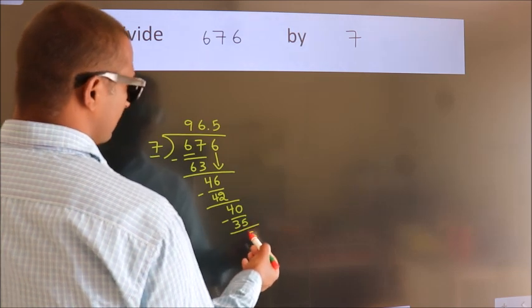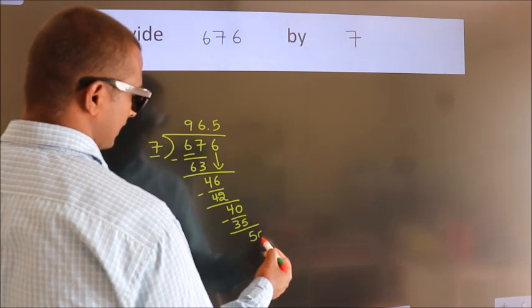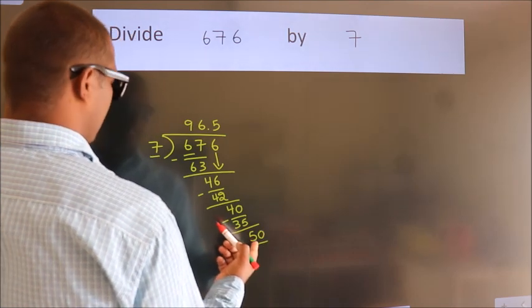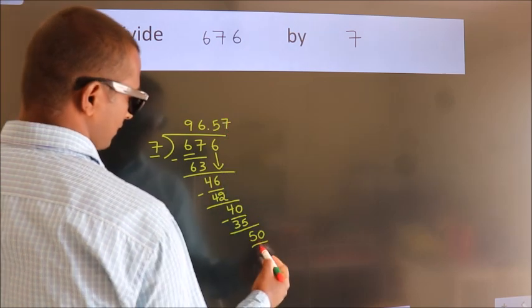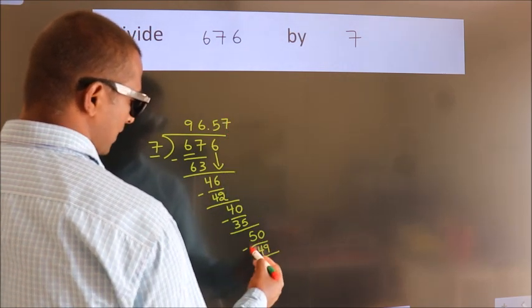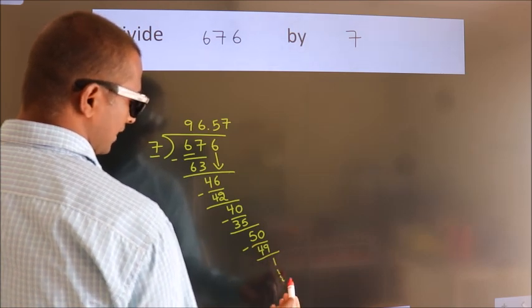After this, we already have the decimal, so directly take 0. So 50. A number close to 50 in the 7 table is 7 times 7 equals 49. Now we subtract. We get 1, and the division continues.